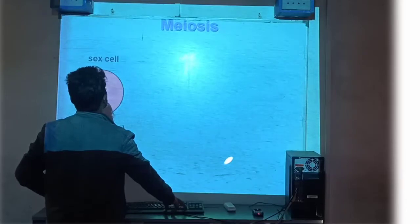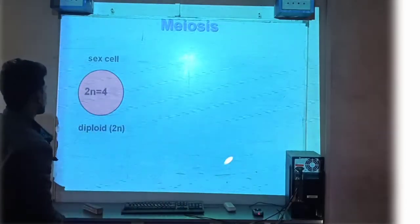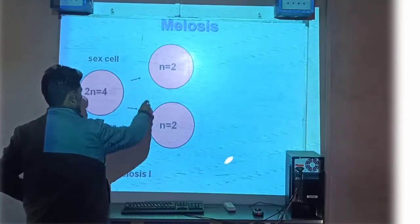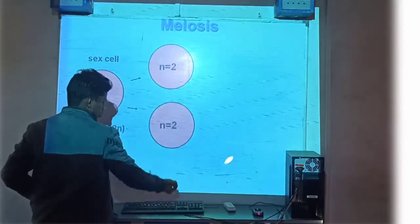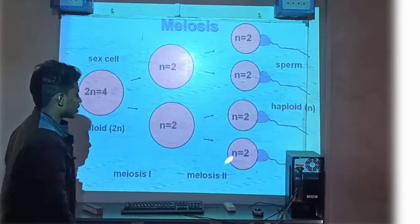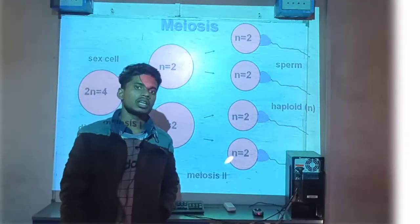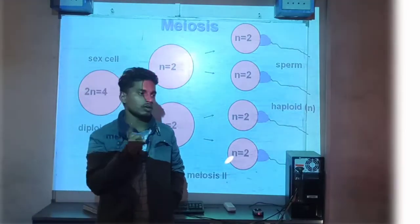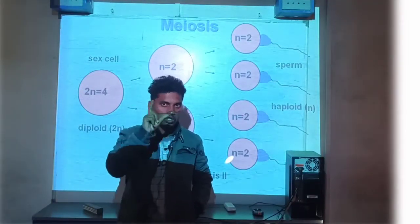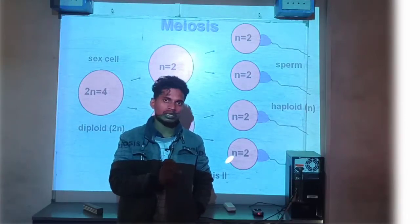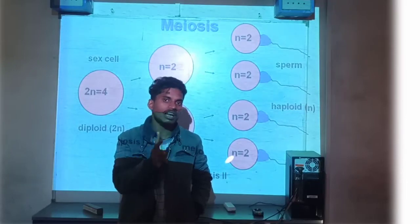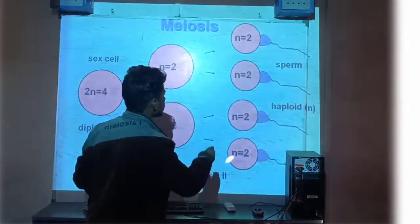Meiosis में sex cell: 2n = 4, that means diploid। Meiosis first के बाद n = 2, n = 2 — और यहाँ four new haploid cells बनकर तैयार होती हैं second process में। Two new cells बनती हैं।